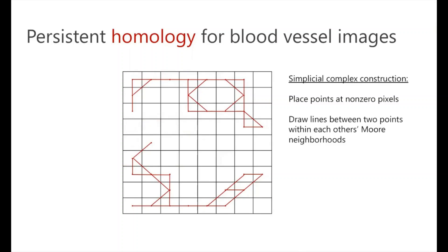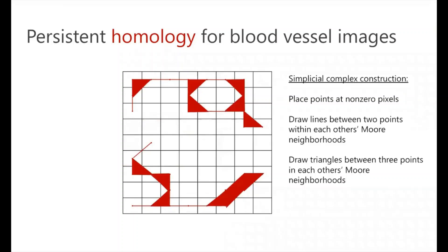And lastly, we're going to fill in any triangles that are all within each other's Moore neighborhood. So we put these triangles between any of those three such points. And now that we've created our simplicial complex here, it's a combination of points, lines, and triangles. We can then compute its homology.